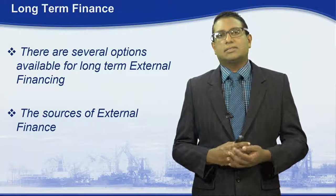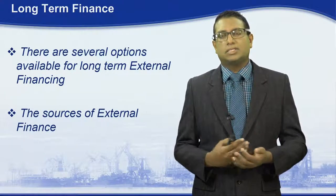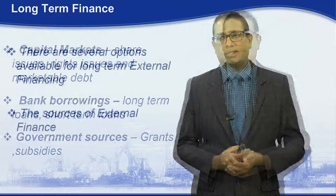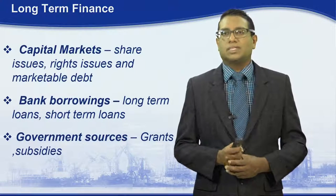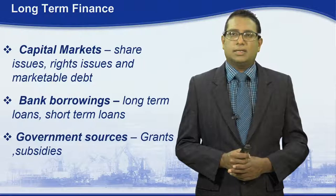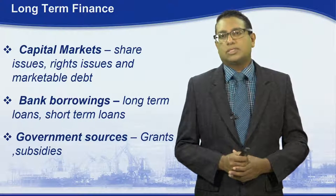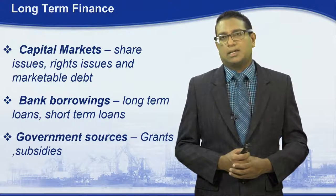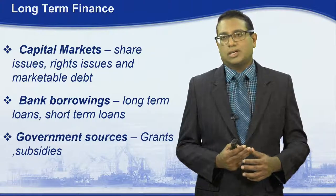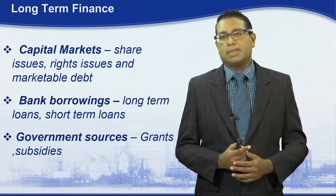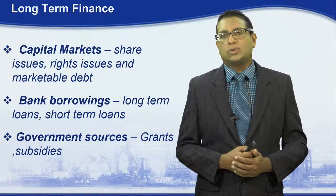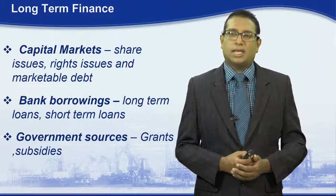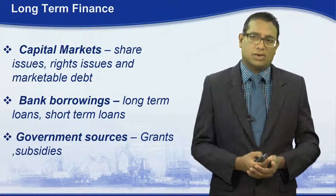Therefore, the need arises for external financing sources. There are several options available for external finances. The main sources are capital markets, bank borrowings, and government sources. Capital markets are related to share issues, rights issues, and marketable debt. Bank borrowings are related to long-term and short-term loans given by banks, and government sources can be government grants or government subsidies.